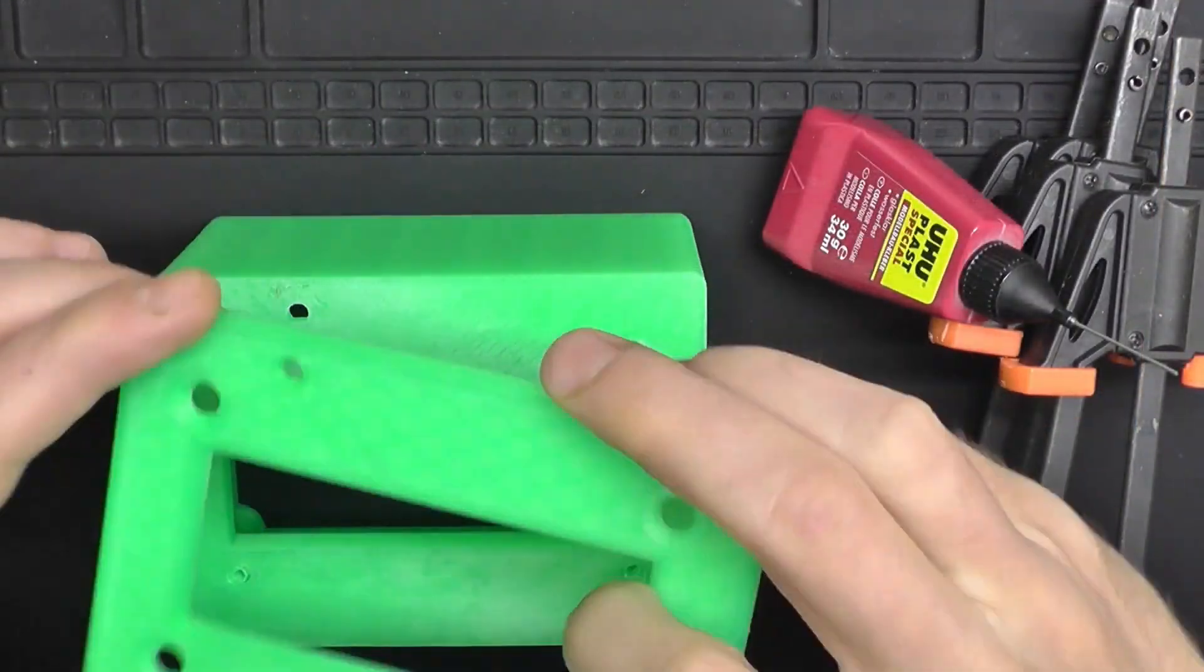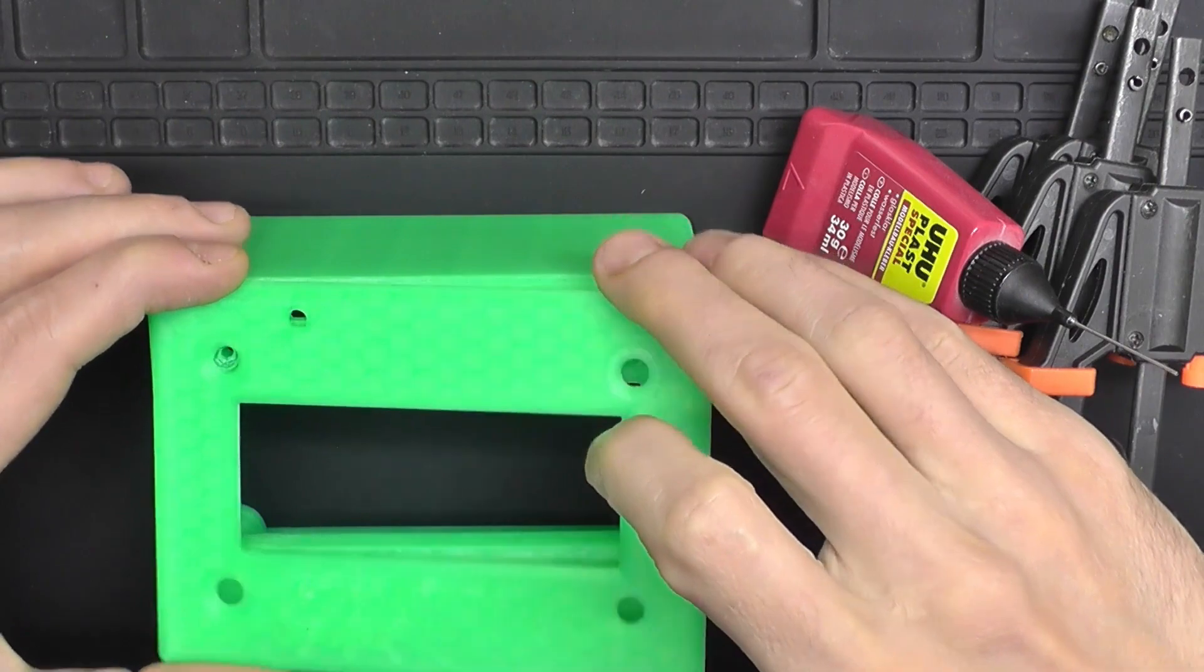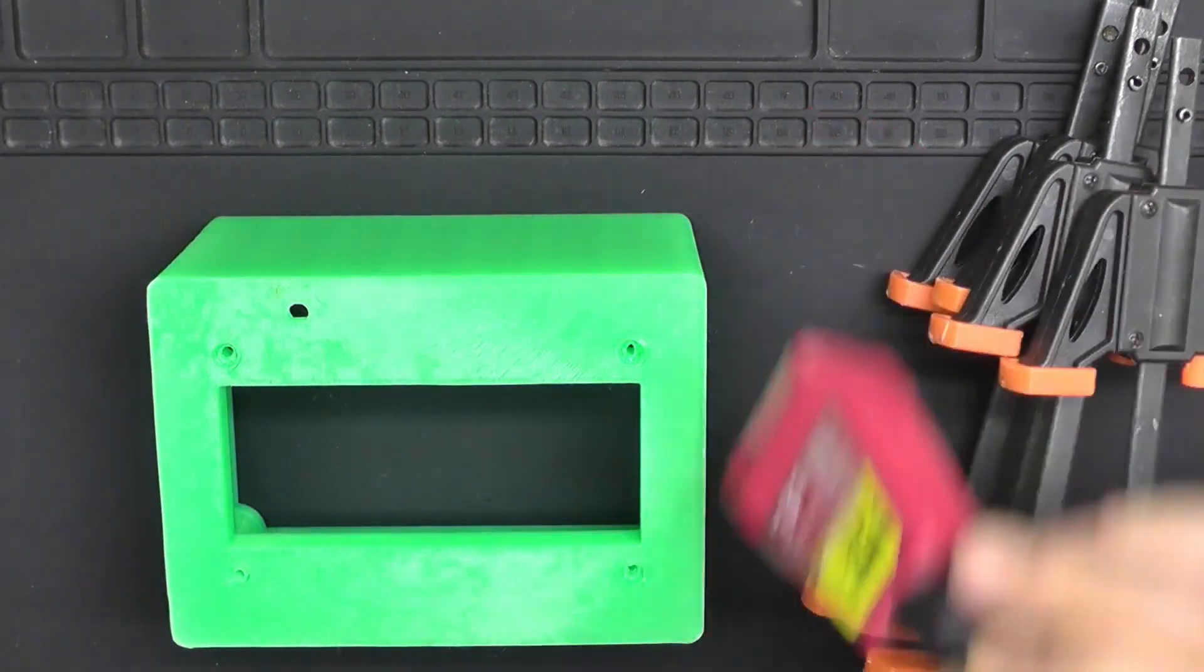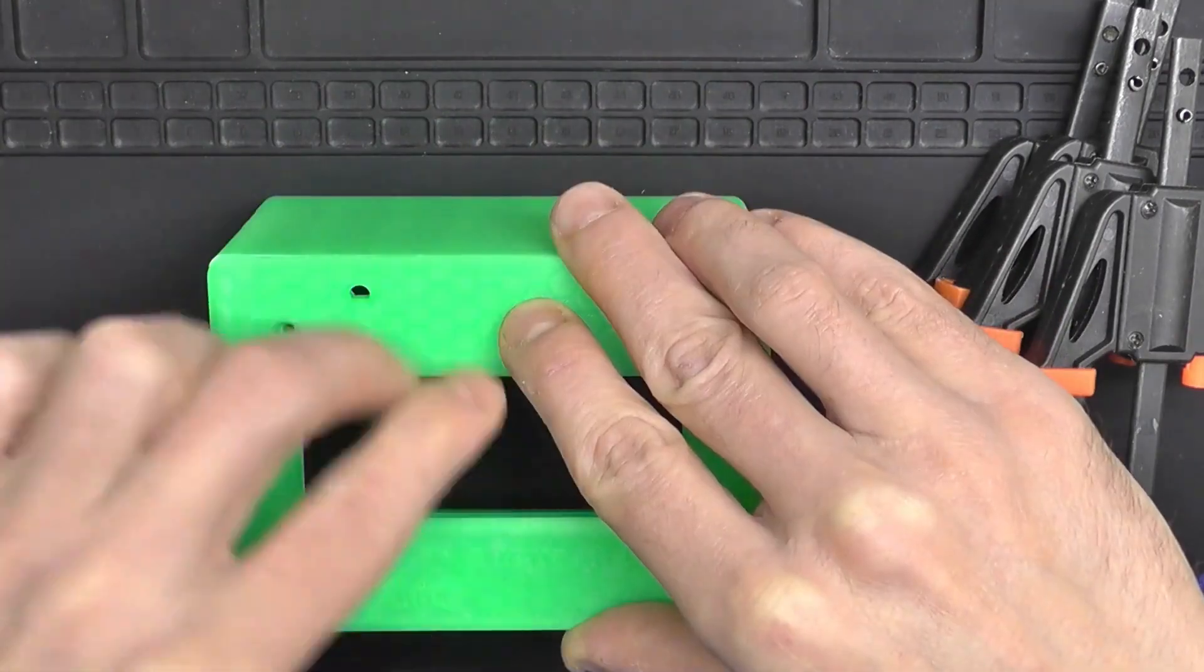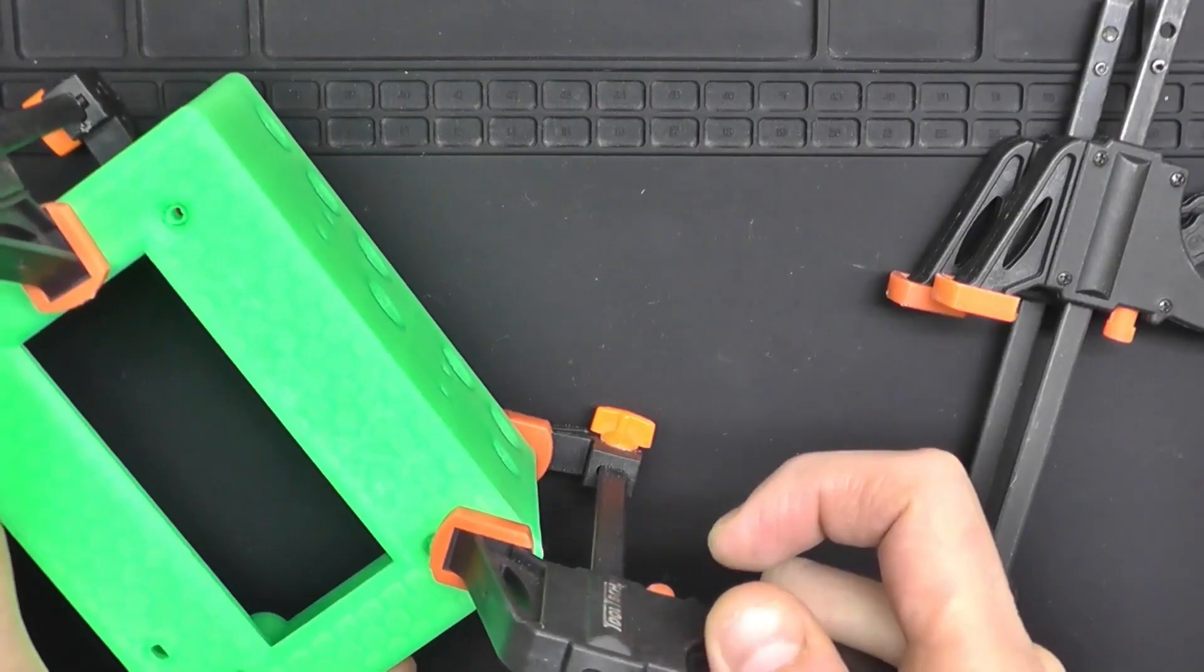Putting everything together is going to be pretty straightforward. You want to start by gluing this front cover on the main part. You got to make sure to have good alignment between these two parts and apply some pressure and just let it a few minutes.